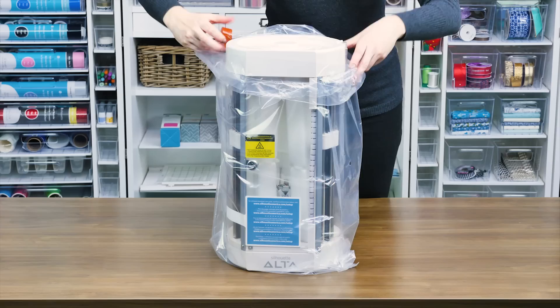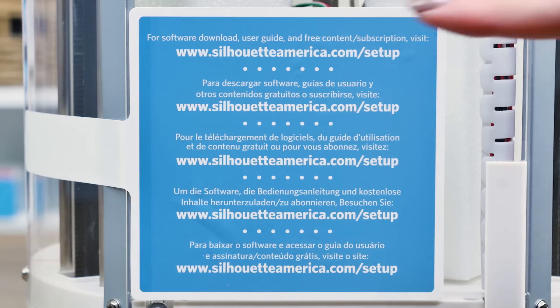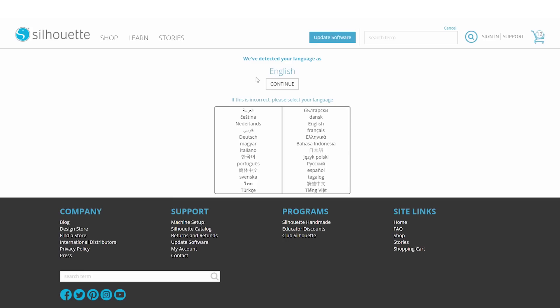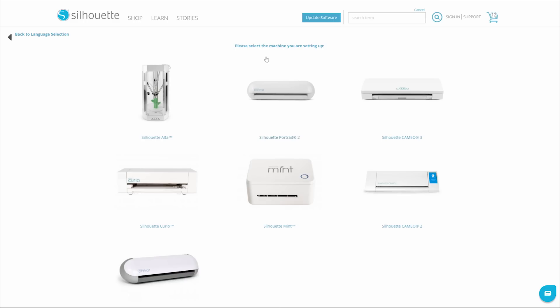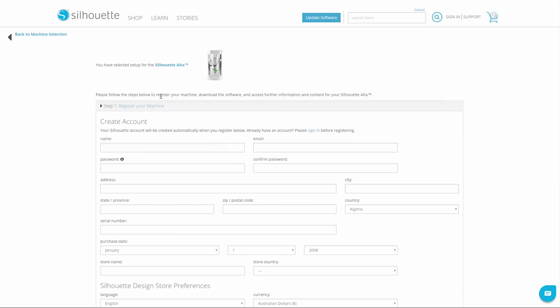Once the Alta is out of the box, you may register your machine at SilhouetteAmerica.com/setup. Completing the registration process will also sign you up for your official Silhouette account.